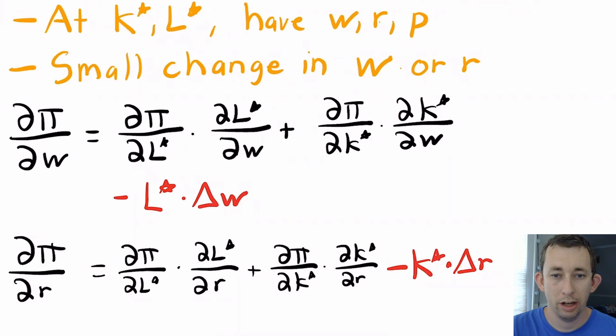Given your profit function, the value function of your profit maximization problem, you can use the derivative of that profit function with respect to W and R, your input prices, to get your conditional factor demand, K* and L*.